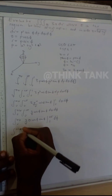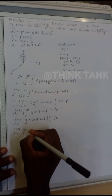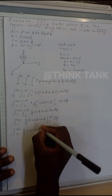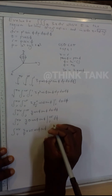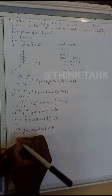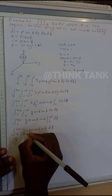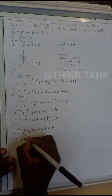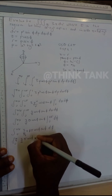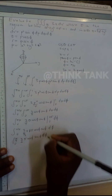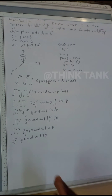Replacing θ with 0 makes the expression 0. Replacing θ with 2π gives 3/4 times 2π cosφ sinφ. So we have the integral from 0 to π/4 of (3/2)π cosφ sinφ dφ.